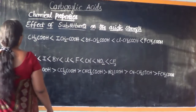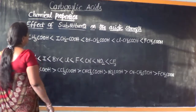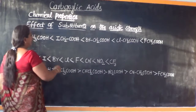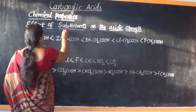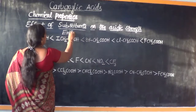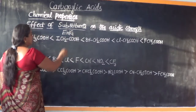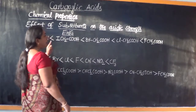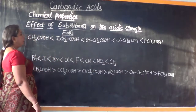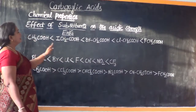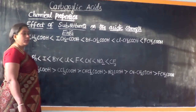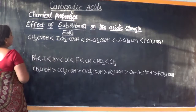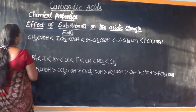Further, in this video lesson, let us understand a few more focused points regarding the electron withdrawing group and, if this is a substituent under consideration, what happens to the acidic strength. I have already written the order of a few carboxylic acids with acidic strength. Let us try naming these carboxylic acids.